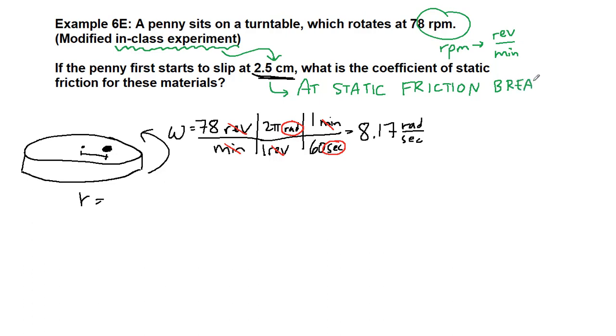When I say breaking point, I also mean the maximum value. We've seen this kind of situation before with static friction, looking at how the maximum value is used in a particular problem. That happens at a radius of 2.5 centimeters. Looking at the units, we know we need meters, so we have 0.025 meters.